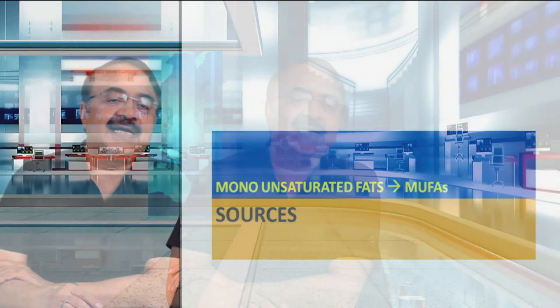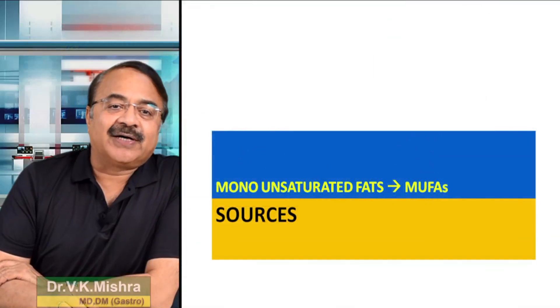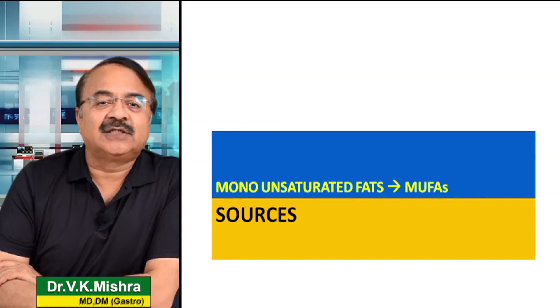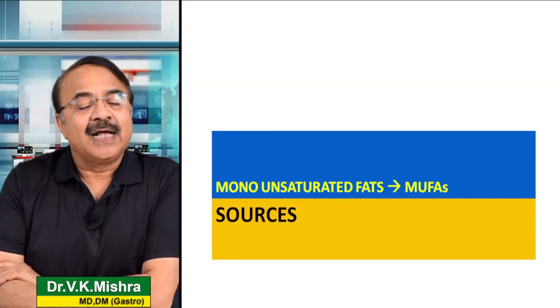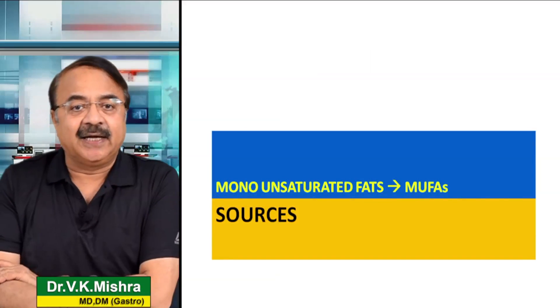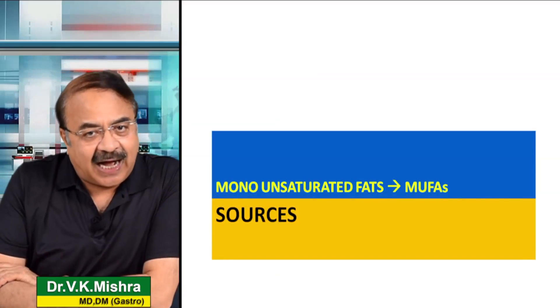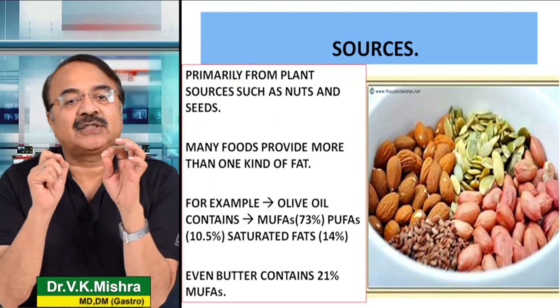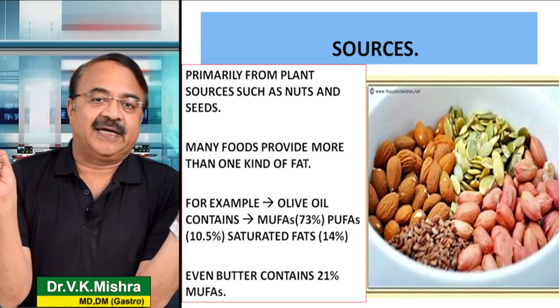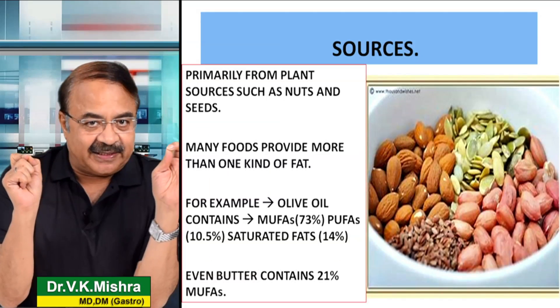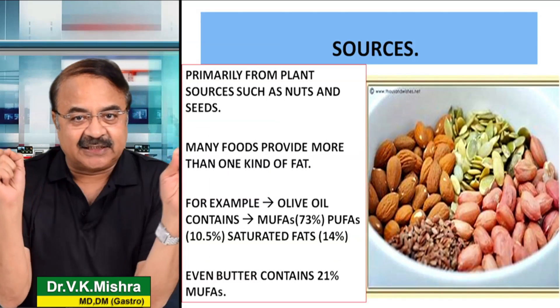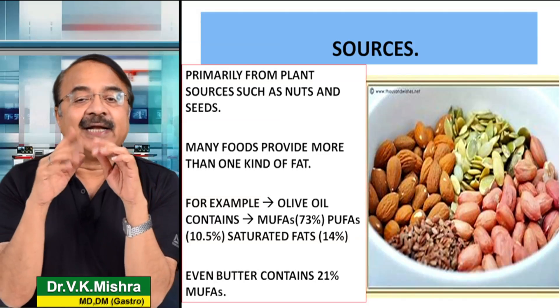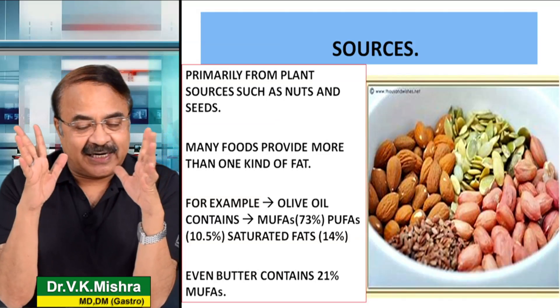अगर ये इतने important हैं, इतने अच्छे हैं, तो हमें ये देखने की ज़रूरत है कि वास्तव में mono unsaturated fats हमें कहाँ से मिलते हैं. MUFA हमें basically plant based sources से मिलता है, हमें nuts से मिलता है, हमें seeds से मिलता है.